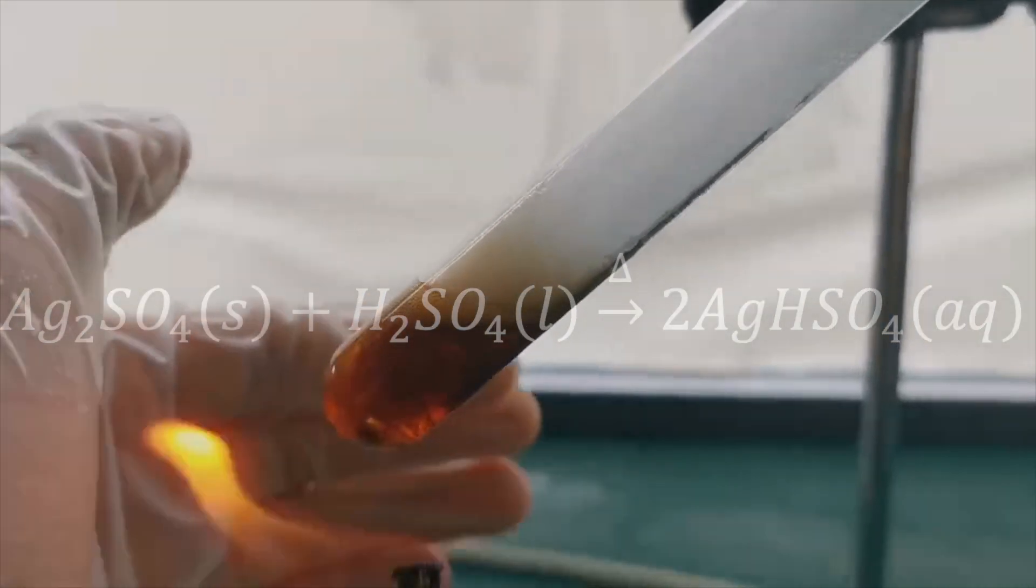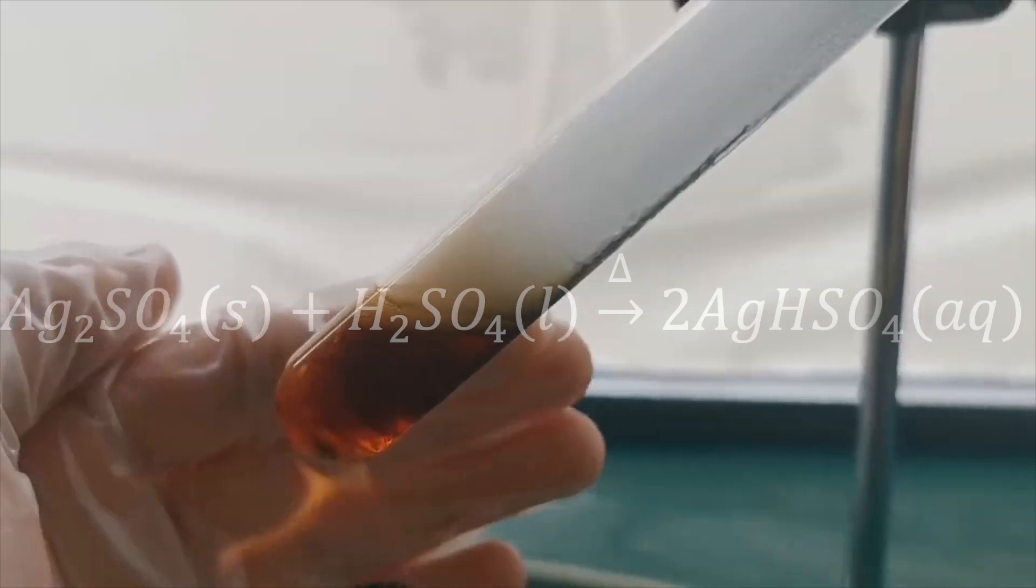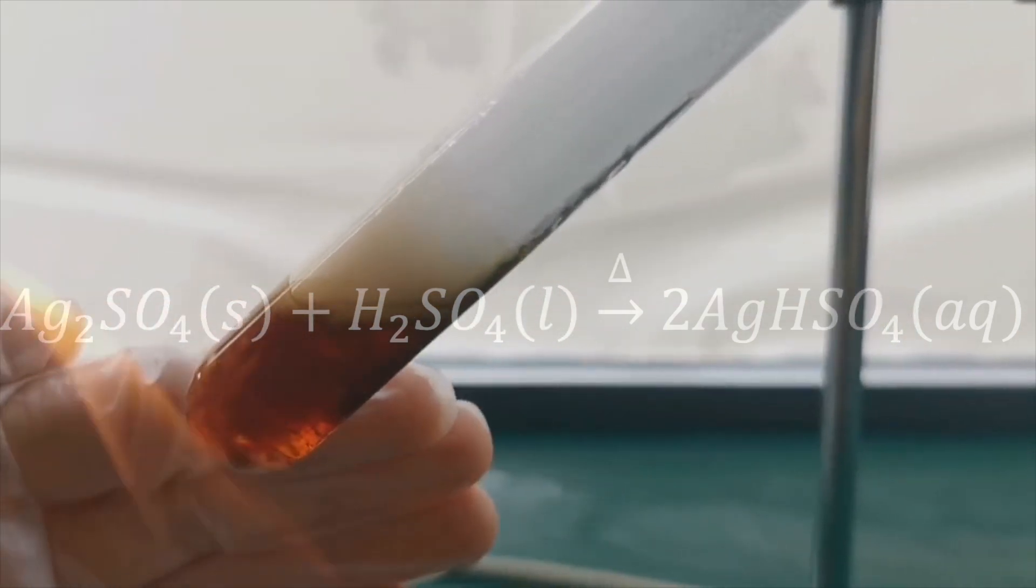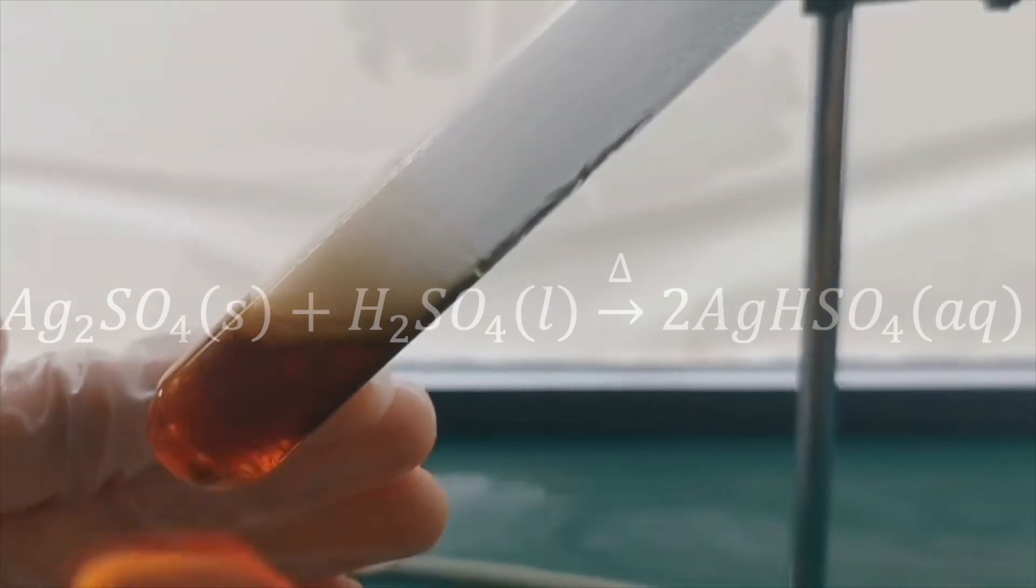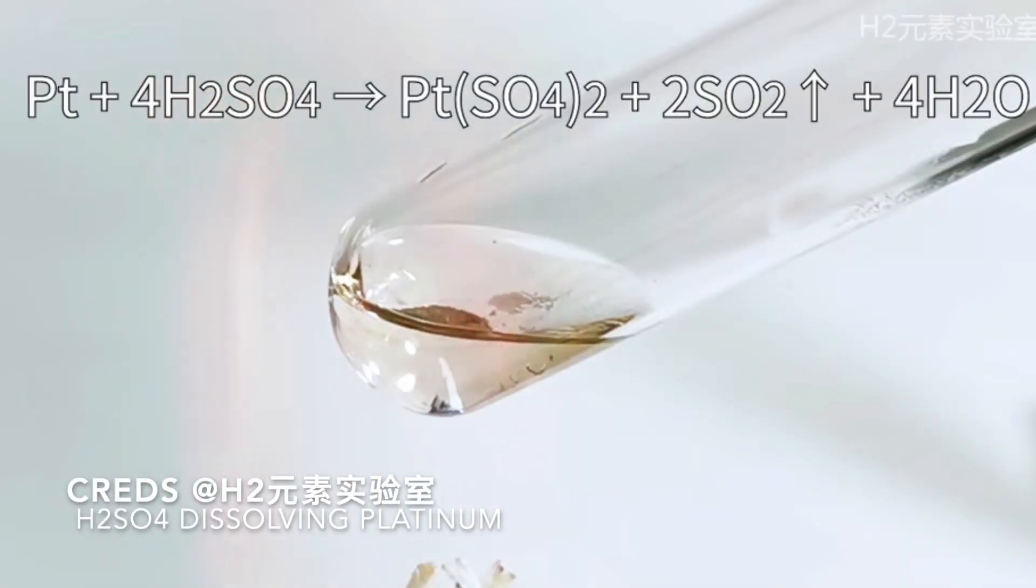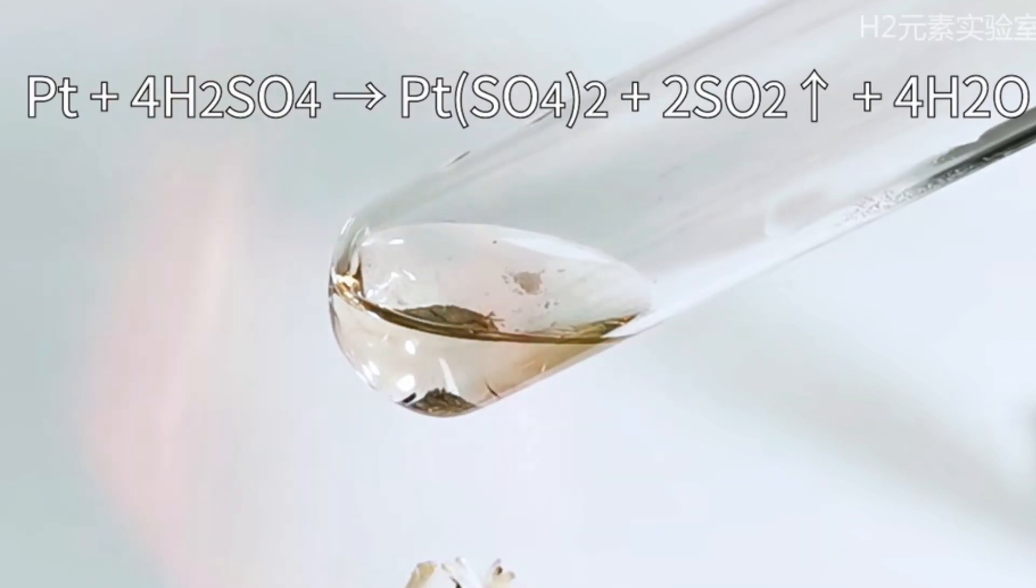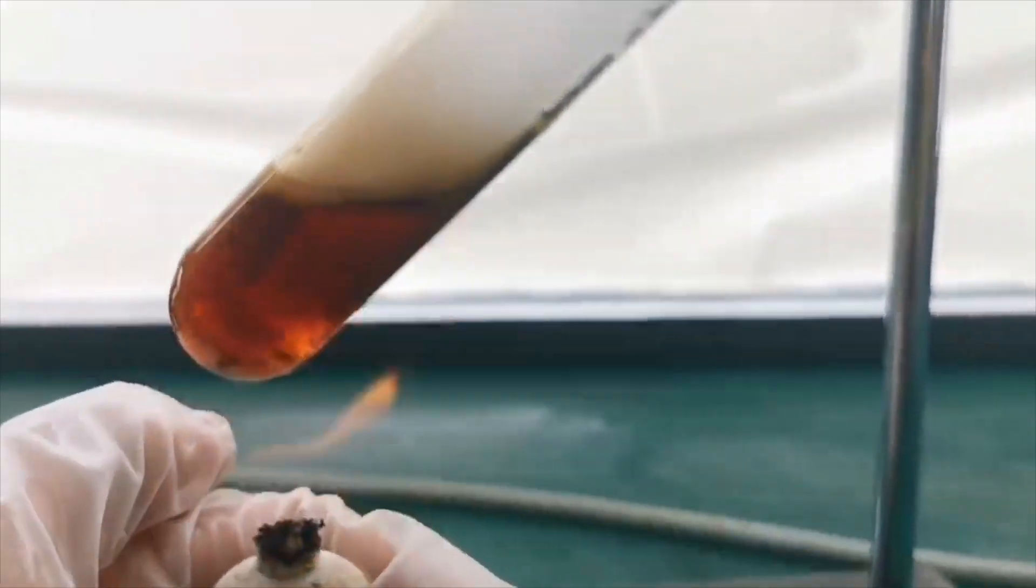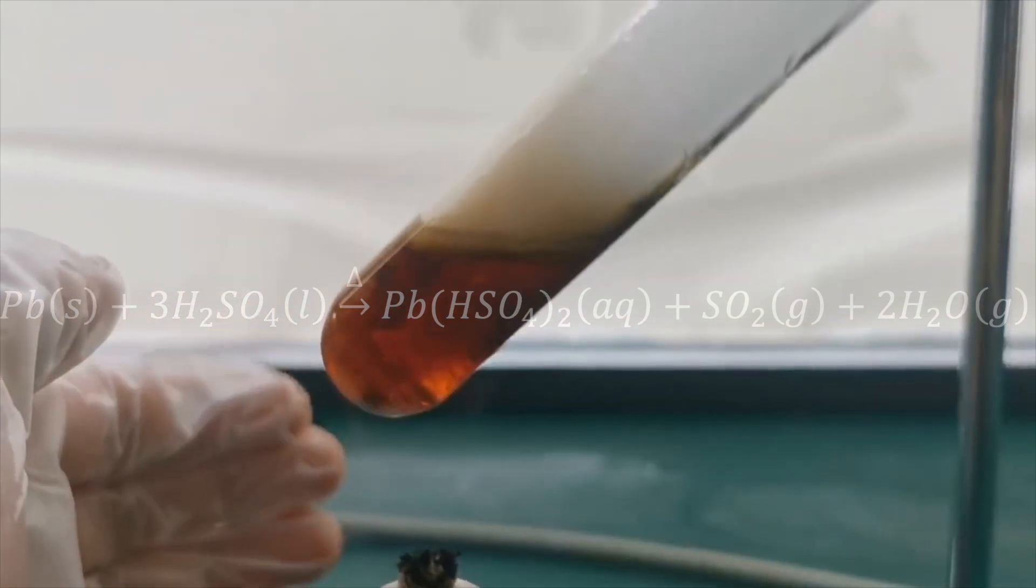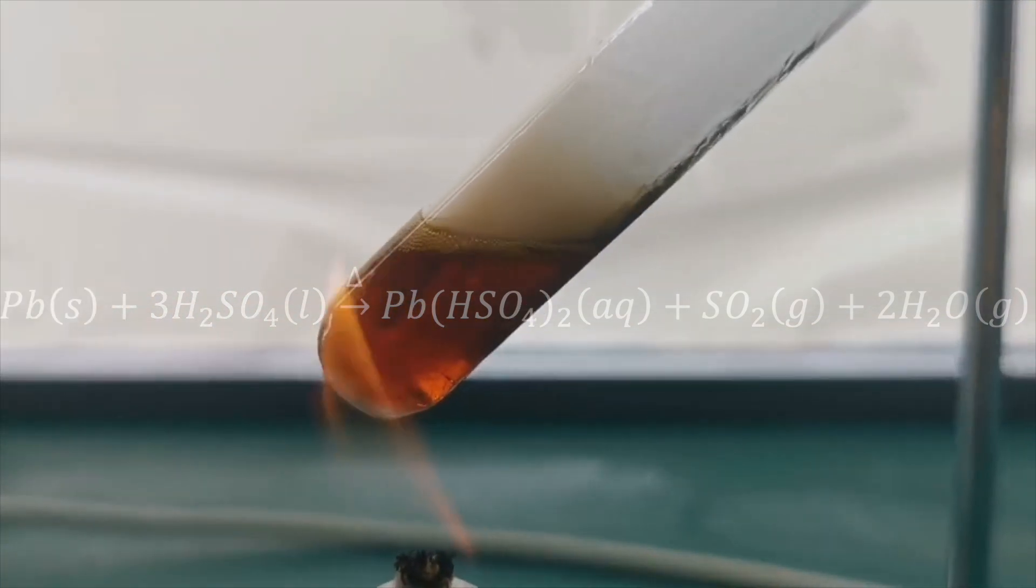By the way, hot concentrated sulfuric acid can dissolve all metals, except for a few metals in the lower transition series, such as tungsten. Even lead, which has an insoluble sulfate, can dissolve in concentrated sulfuric acid, forming lead hydrogen sulfate, just like silver.